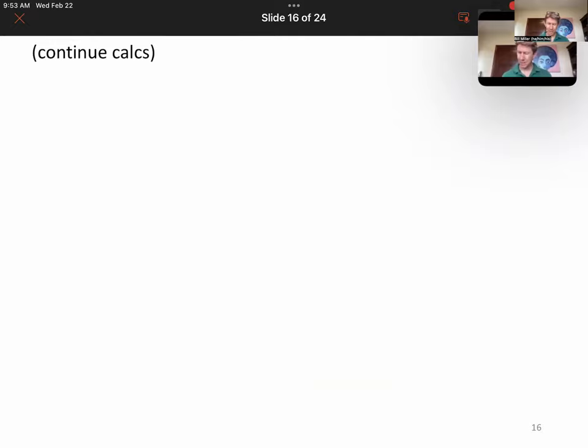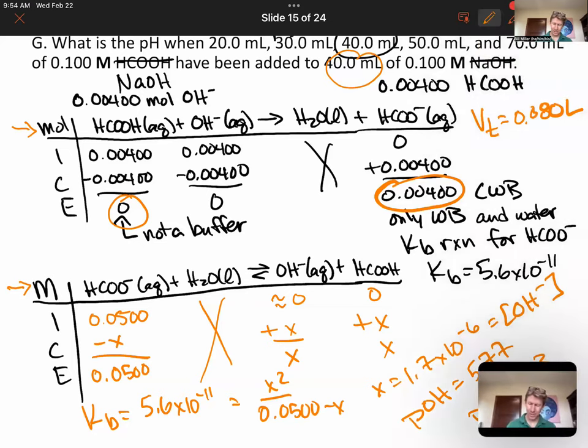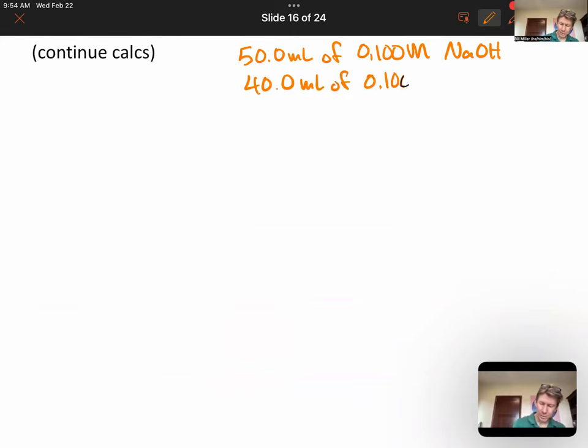And that's going to be enough. I'm going to leave this space here. You can do some more of these calculations. And in fact, what I'd like you to do is a pH calculation for 50 milliliters using this exact same system. So it's going to be 50 milliliters of 0.100 molar sodium hydroxide, 40 milliliters of 0.100 molar formic acid. And tell me what the pH will be.